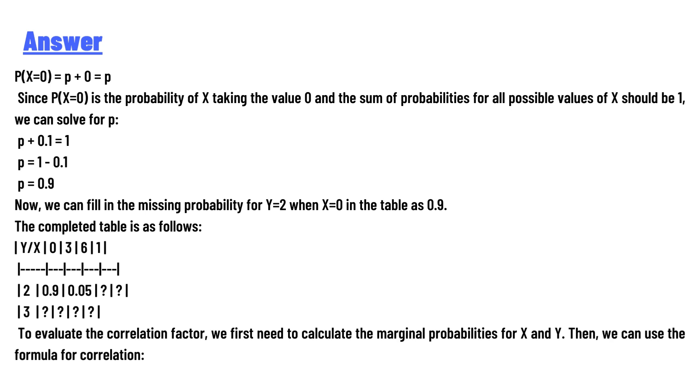P + 0.1 = 1, so p = 1 - 0.1 = 0.9. Now we can fill in the missing probability for Y=2 when X=0 in the table as 0.9. The completed table is as follows: Y over X with values 0, 3, 6, 1; row 2 shows 0.1, 0.15, etc. To evaluate the correlation factor, we first need to calculate the marginal probabilities for X and Y.